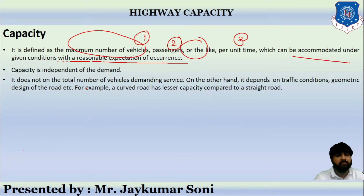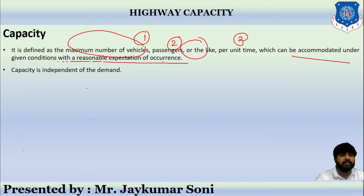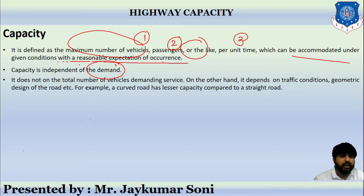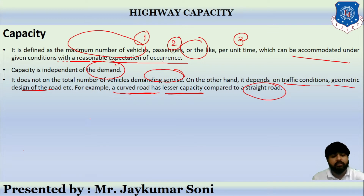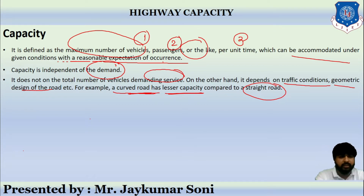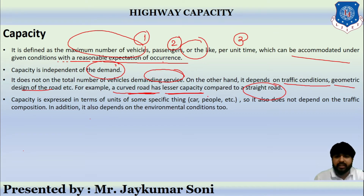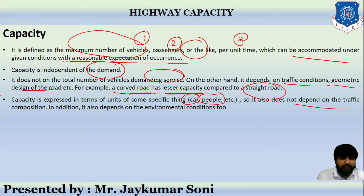Before learning about highway capacity, let us discuss some important things. Capacity does not depend on demand — it is independent of demand. It does not depend on the total number of vehicles, but on the total number of vehicles demanding the service. It also depends on traffic conditions and the geometric design of the road. For example, a curved road has lesser capacity than a straight road, because drivers must be more cautious on curves. Capacity is expressed in terms of cars or people.